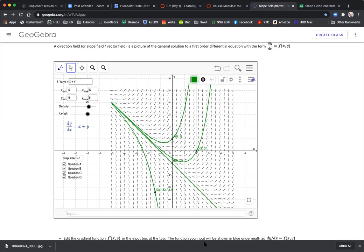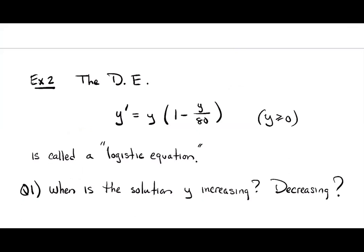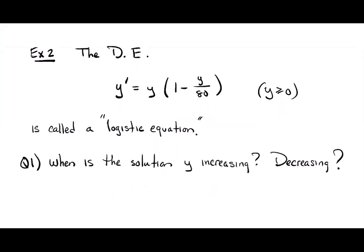Let's switch back to the whiteboard. As a second example, I want to continue analyzing differential equations by looking at some direction fields, but switching the differential equation. This one is y prime equals y times the quantity (1 minus y/80), with y greater than 0. It has a name — it's called the logistic equation, and it's used in population modeling.